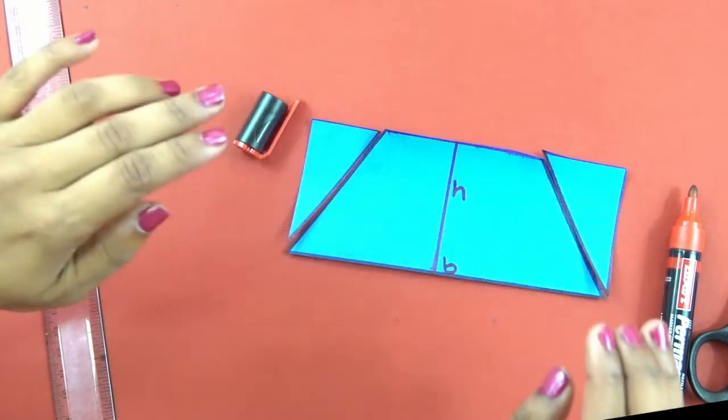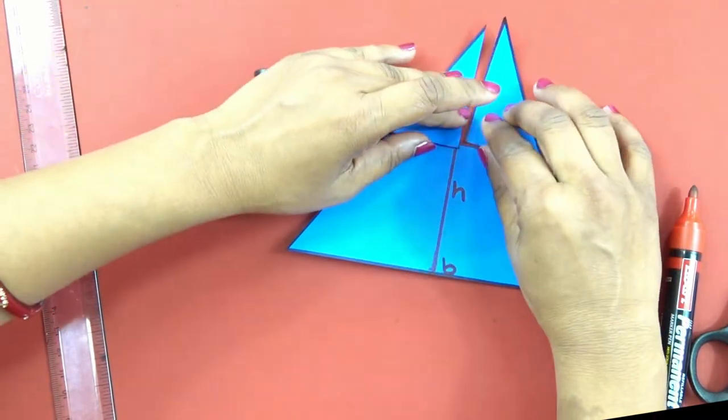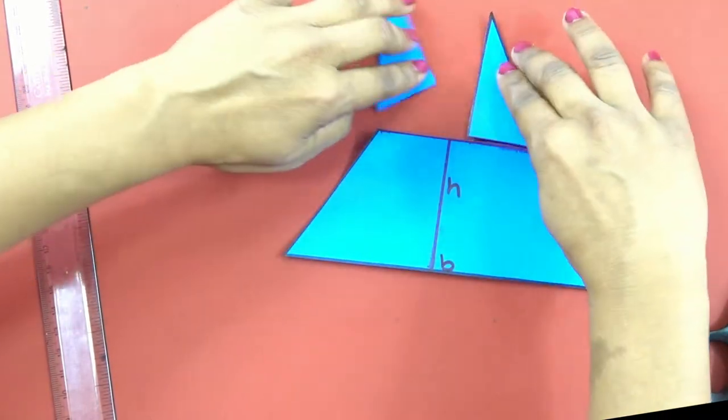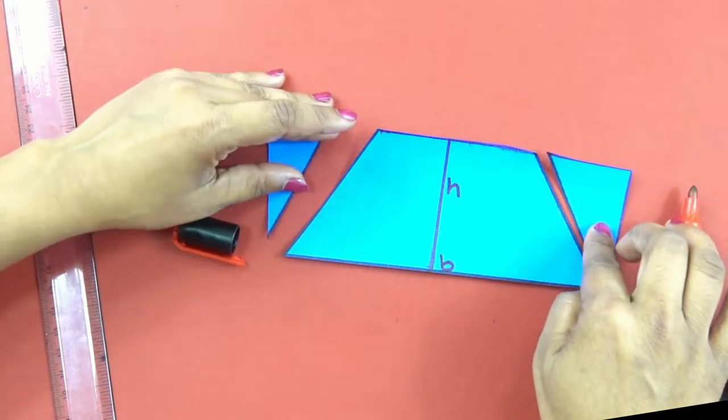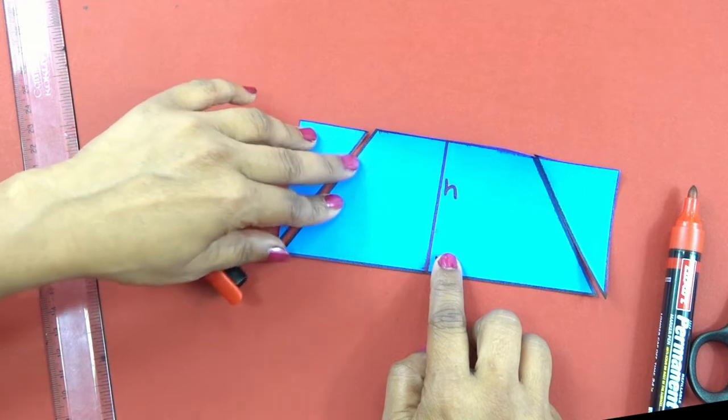And what we have got? We have got from the same acute angle triangle, we have got now a rectangle and this rectangle has the